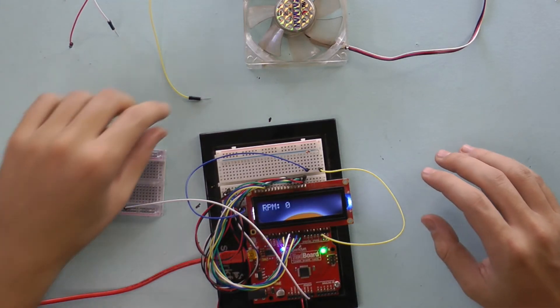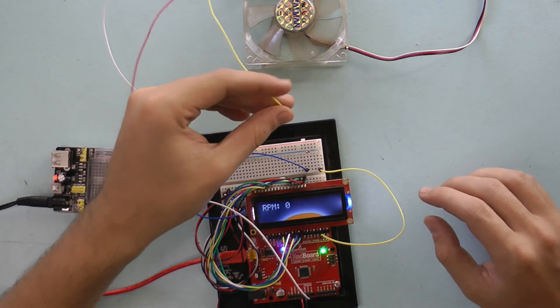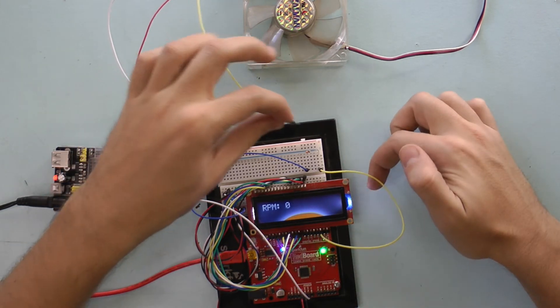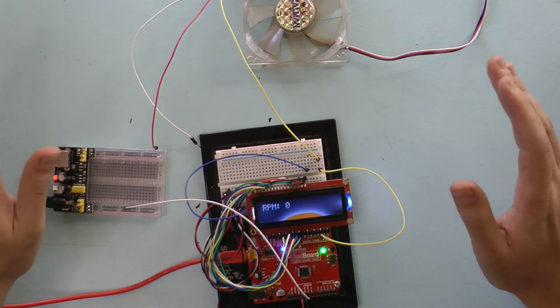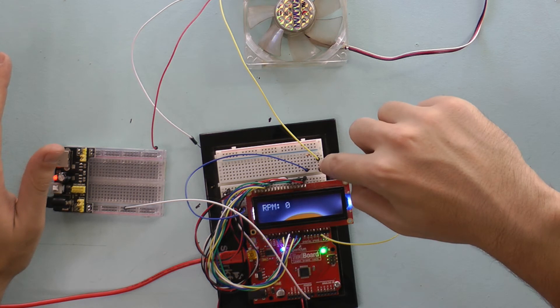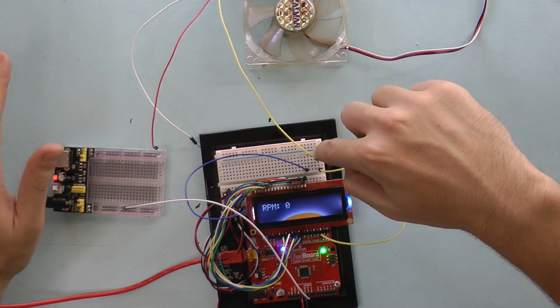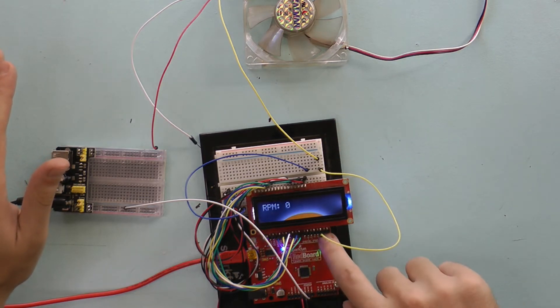When you're connecting the fan what you want to do is you want to connect the PWM pin from the fan to the same line as this sensor. So the way that you have this set up is you have the fan PWM value going into the same line as your pull up resistor. And then the PWM pin is going into the Arduino.